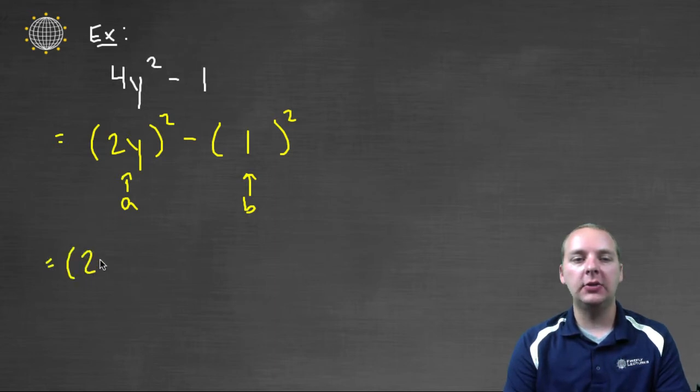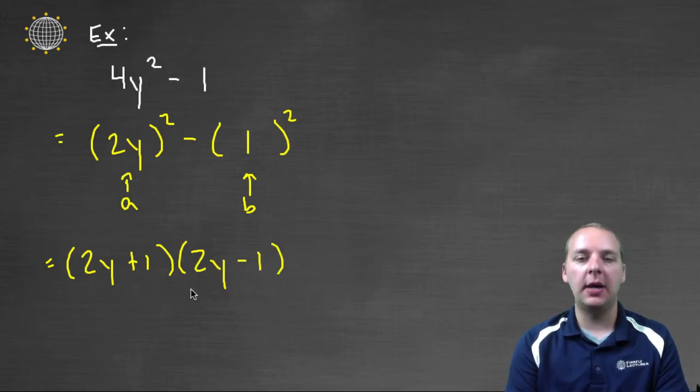We'll factor this as (2y + 1)(2y - 1). That's (a + b)(a - b).